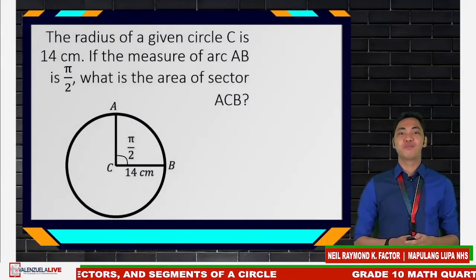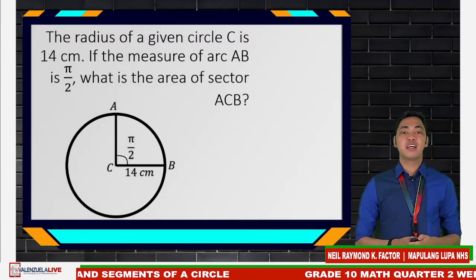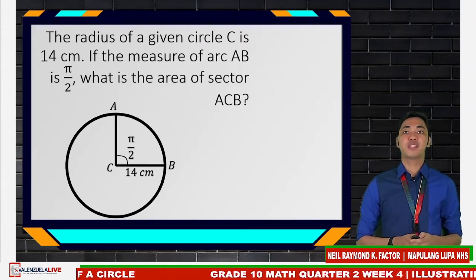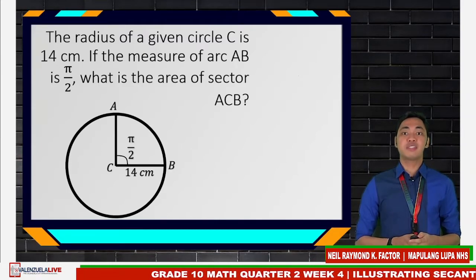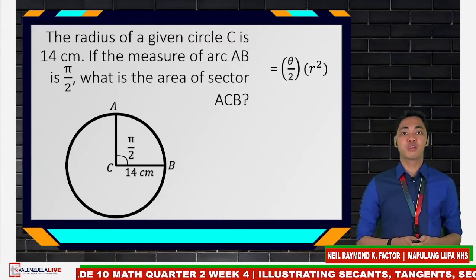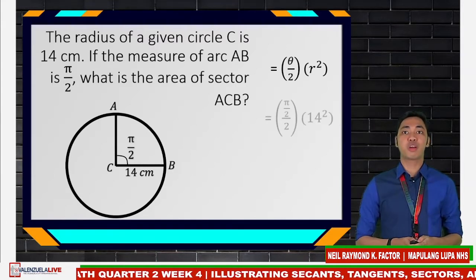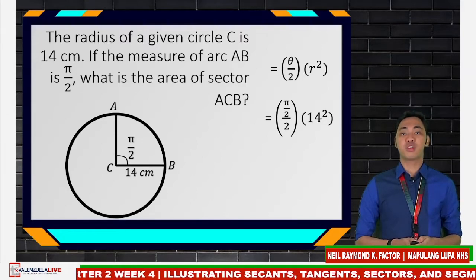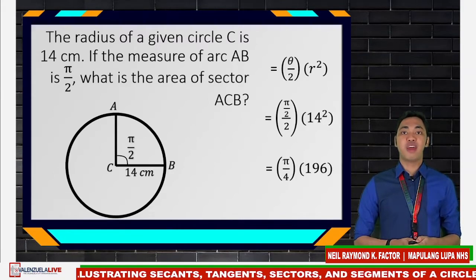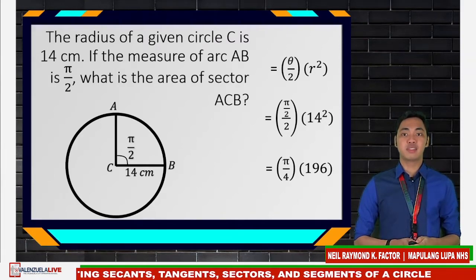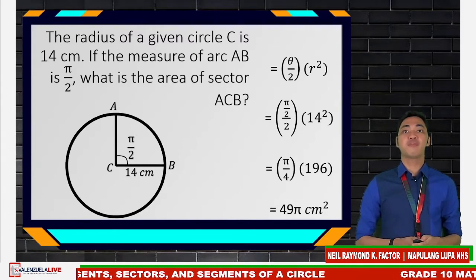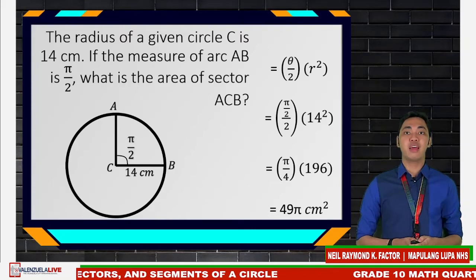Let us have an example. The radius of a given circle C is 14 centimeters. If the measure of arc AB is pi over 2, what is the area of sector ACB? The sector angle is in radians — pi over 2 — so we use the formula theta over 2 times r squared. Substituting: pi over 2, divided by 2, times 14 squared gives us pi over 4 times 196, which equals 49 pi square centimeters.